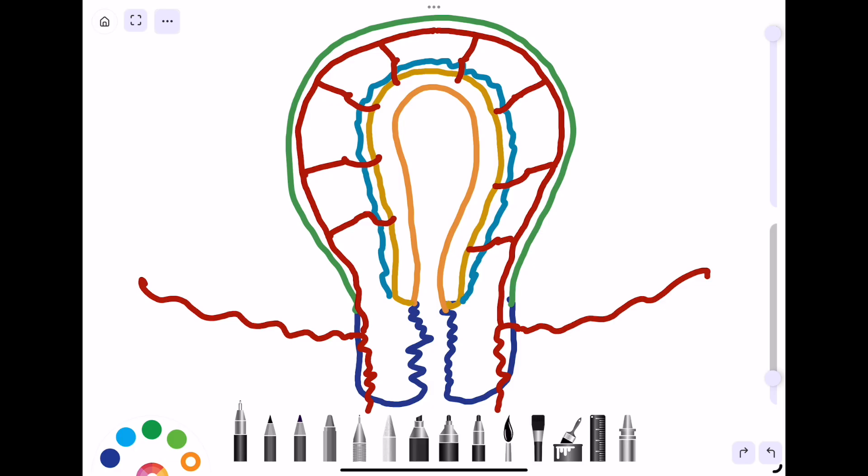The ascending branch further divides into radial, basal, and spiral artery. So let's understand the layers of the uterus.